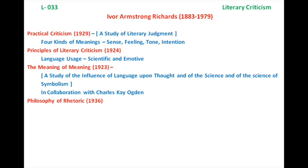Remember, the concept of four types of meanings is given by I.A. Richards and is mentioned in the book Practical Criticism. There is also another work by him — The Meaning of Meaning — but be careful: do not relate the four types of meaning to this work. The Meaning of Meaning has the subtitle 'A Study of the Influence of Language upon Thought and of the Science of Symbolism,' and it was published in the year 1923.